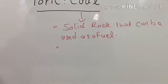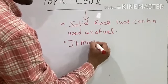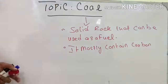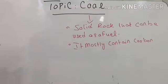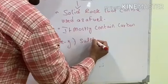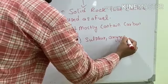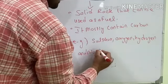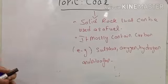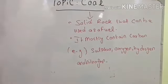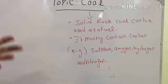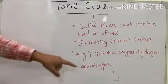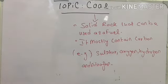Coal mostly contains carbon, which is why it is used in the combustion process. It also contains some gases such as sulfur, oxygen, hydrogen, and nitrogen. From this definition, we know that coal is a solid rock that can be used as a fuel. Carbon is the most abundant element found in coal, and it contains smaller amounts of sulfur, oxygen, hydrogen, and nitrogen.